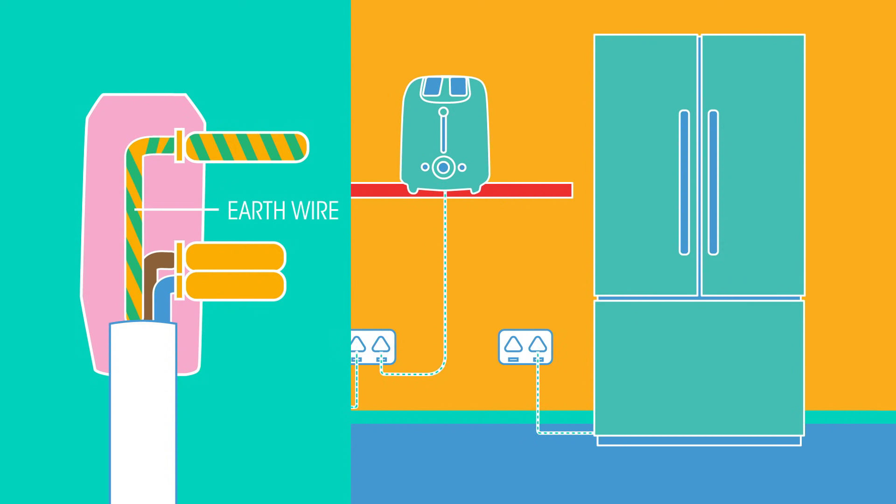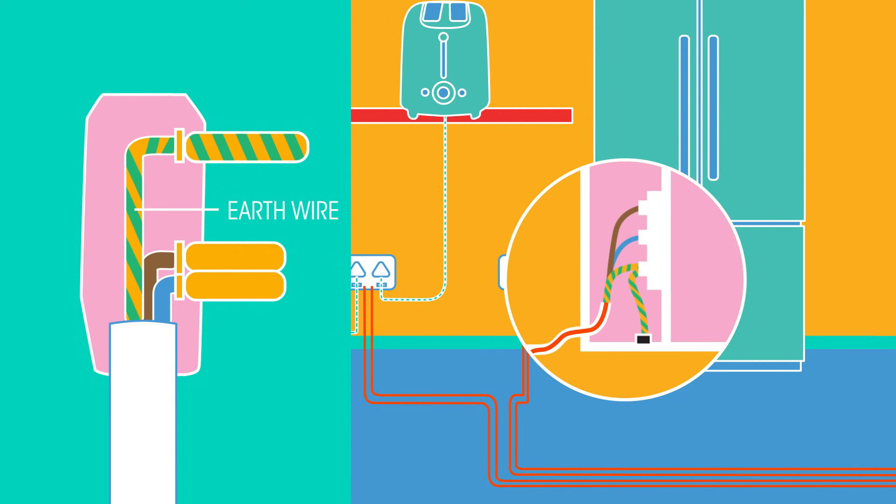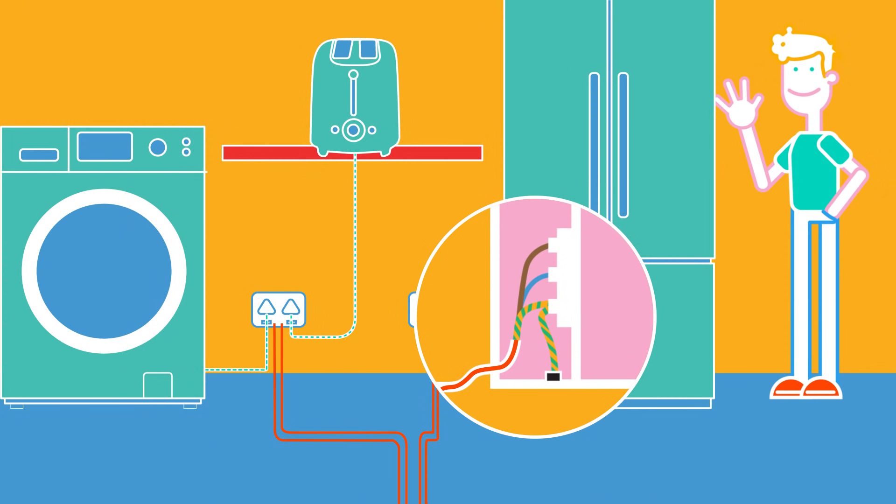The earth wire connects to the earth pin, which takes the current away from the appliance, into the wiring of your house, and down to the earth through the house's earthing system. So the current runs through the earth wire rather than running through you if you touch the appliance. Much safer.